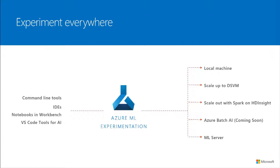With the data science lifecycle in mind, this is what the experimentation service provides you. On the right, as I said, you can start simple — running experiments on your local machine. We don't expect a data scientist to start on a GPU straight away. As you see a need, you can scale to a data science VM on the cloud, or scale out to a Spark cluster and Machine Learning Server.